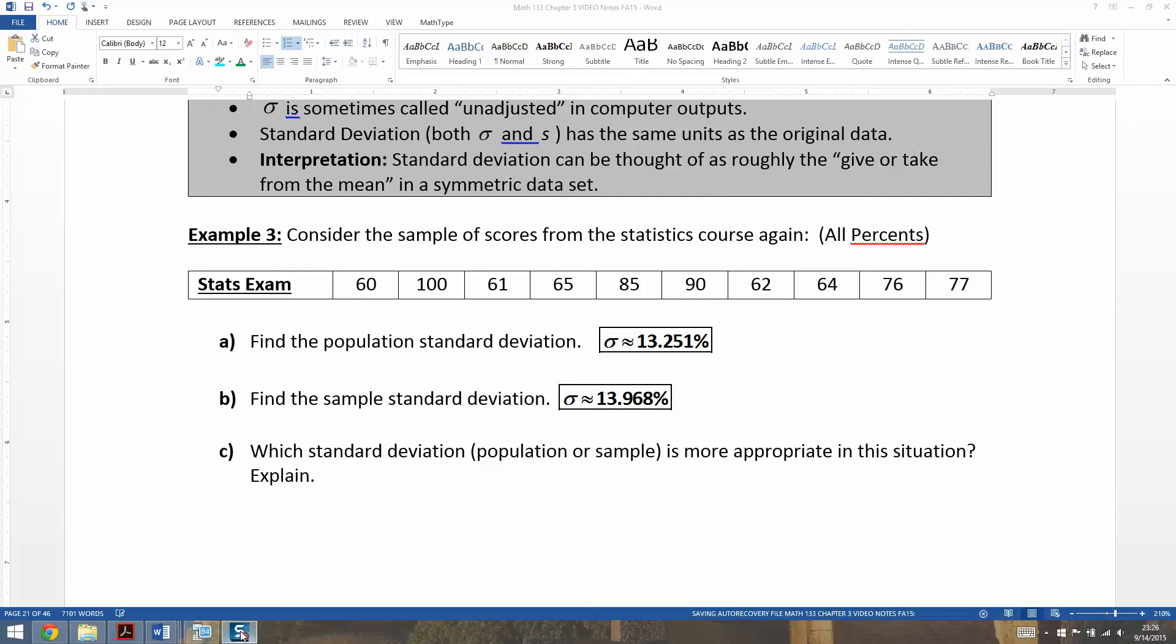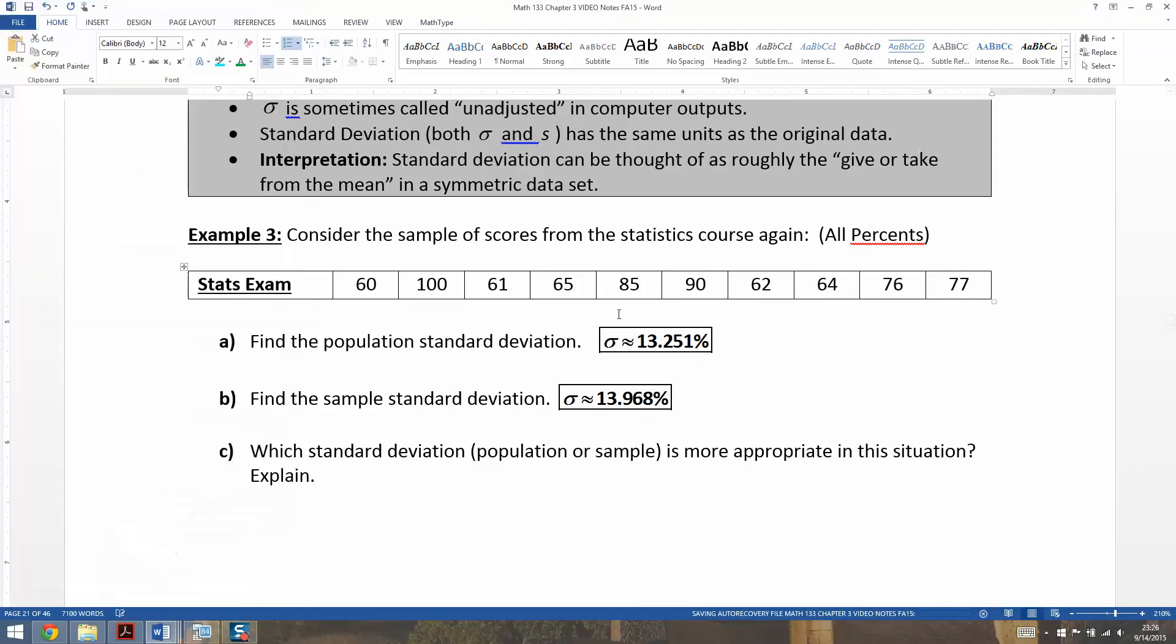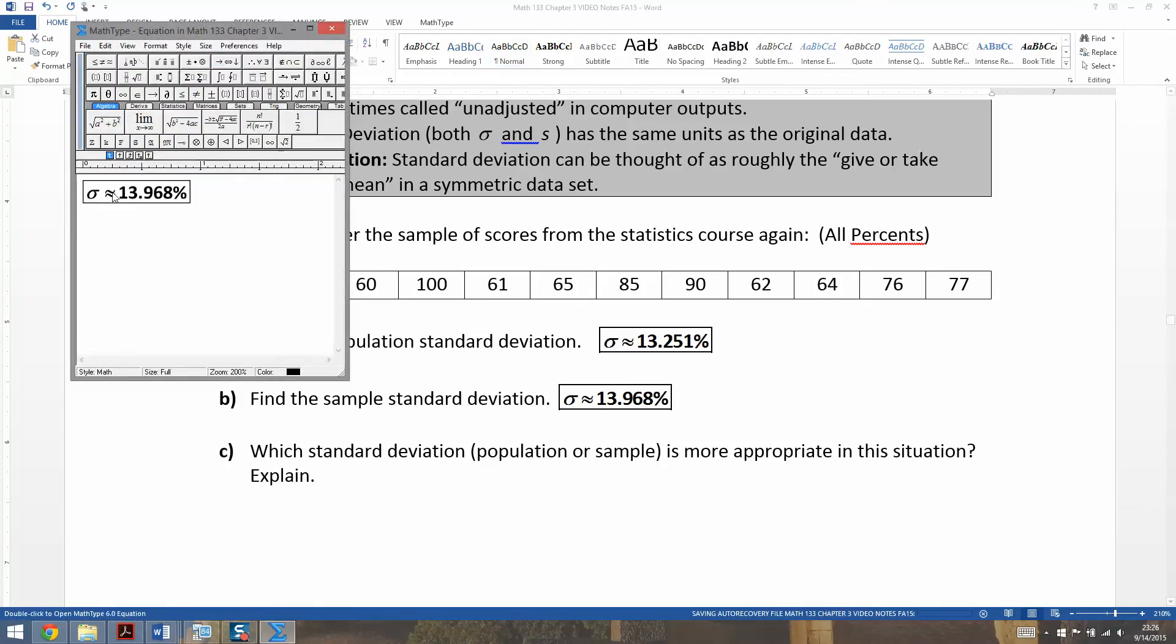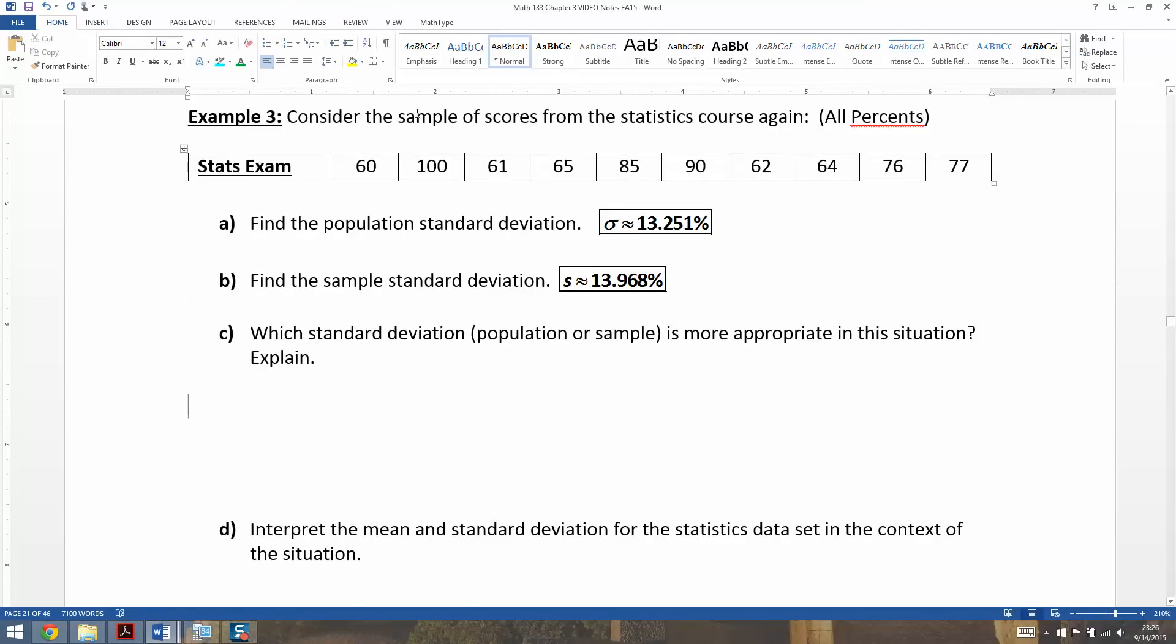There are those two. And you can see that they have the same unit as your original data set. So since these were exam scores and percents, then your standard deviations are also in percents. Oops, that bottom one's an s, not a sigma. All right. All right. Now, which would be more appropriate for the situation?